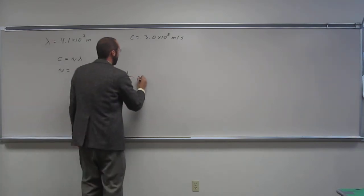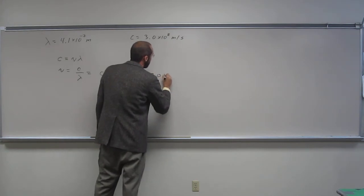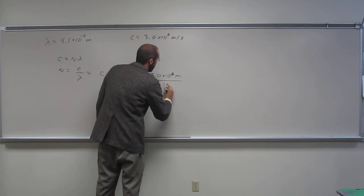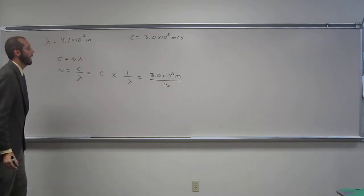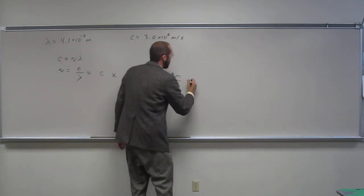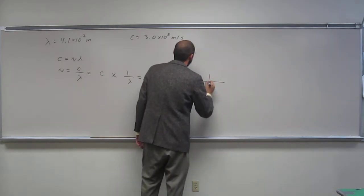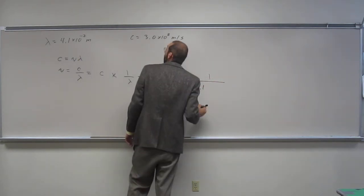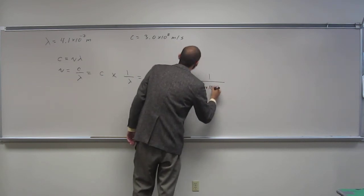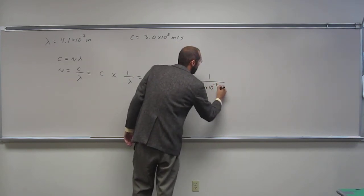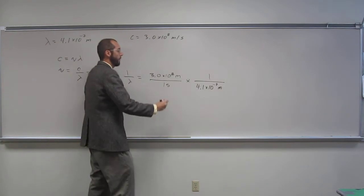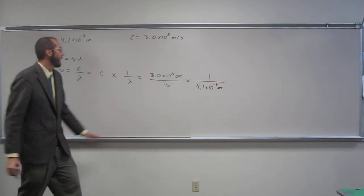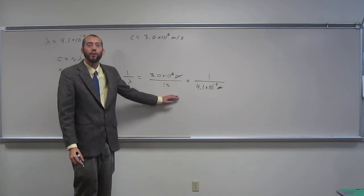So if you do that, you get 3.0 times 10 to the 8th meters per one second. And then you can multiply that by 1 over your wavelength, 4.1 times 10 to the negative 7th meters. So hopefully you can see that cancels out meters like that, right? And that gives you per seconds for your units.